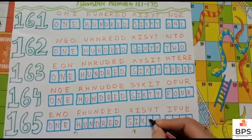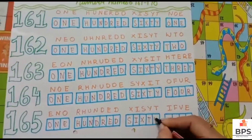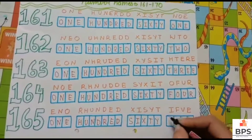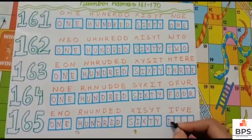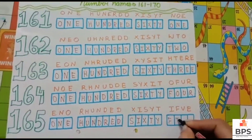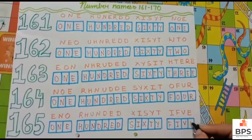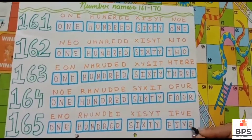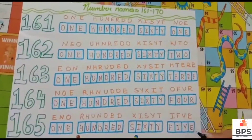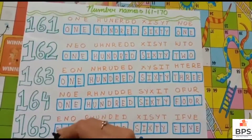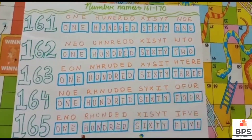One hundred sixty five. 165. X-T-Y, sixty. F-I-V-E, five. 165.